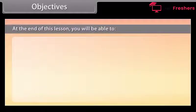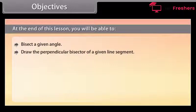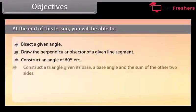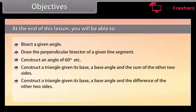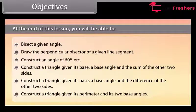At the end of this lesson, you'll be able to: bisect a given angle; draw the perpendicular bisector of a given line segment; construct an angle of 60 degrees; construct a triangle given its base, a base angle and the sum of the two other sides; construct a triangle given its base, a base angle and the difference of the other two sides; and construct a triangle given its perimeter and its two base angles.